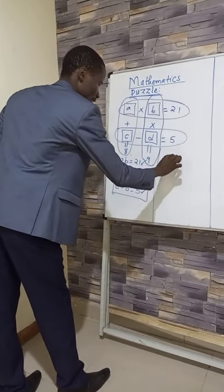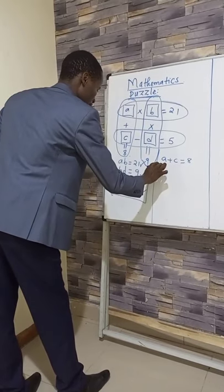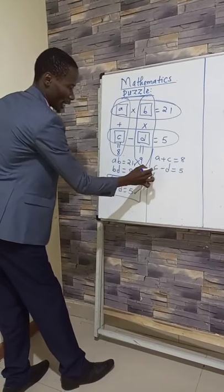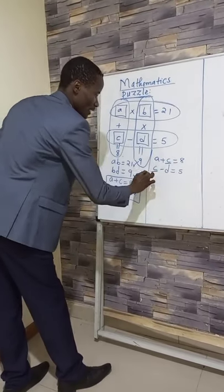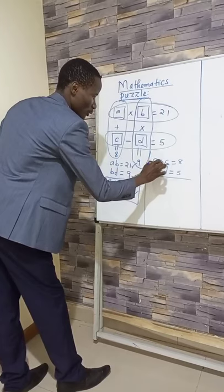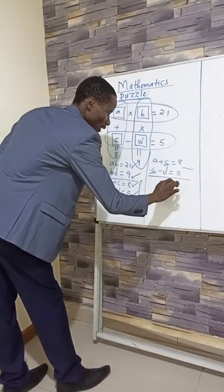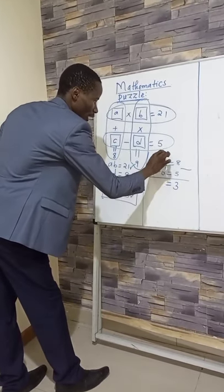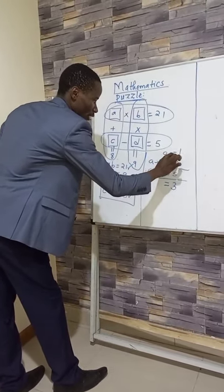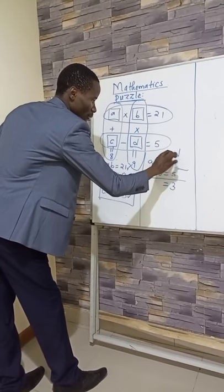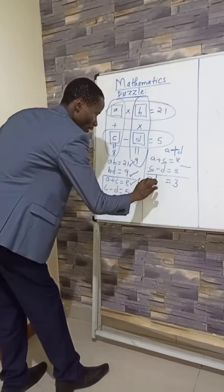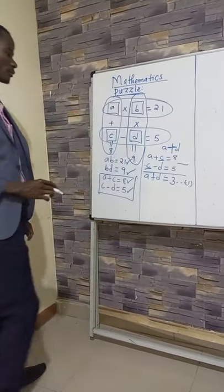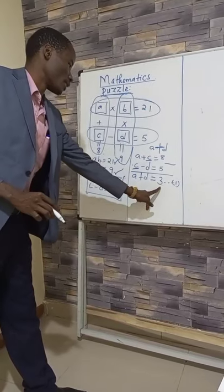We shall have A plus C is equal to 8, then C minus D is equal to 5. Using the elimination method, we can eliminate C. Because C is positive in both, we subtract. 8 take away 5 is 3, which is equal to A take away D. Negative negative becomes positive, so we have A plus D is equal to 3. This forms equation 1.